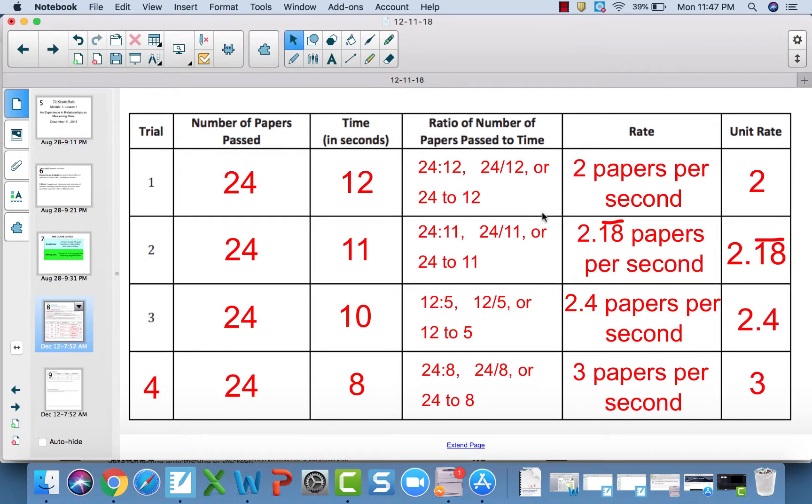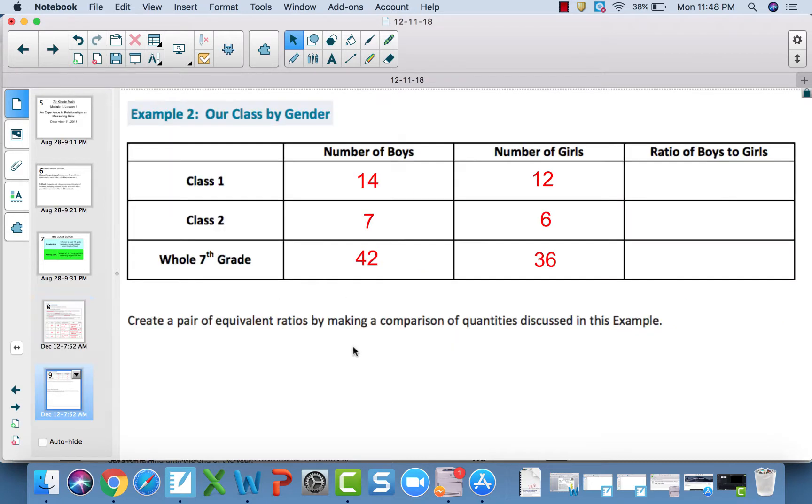What you see here is what your table should look like. The first one was done for you. For trial number two, I want you to notice the line over the one eight. That line is there because when you divide 24 by 11 and find the rate and the unit rate, that one eight repeats over and over again. If you put a line over it, that marks the repetition. So it is 2.18 with the line over it. For number three, you should have got 2.4. No line because it stops at 2.4. And then number four, you should have got three papers per second.